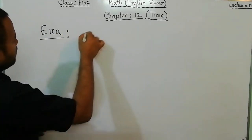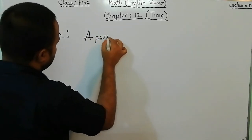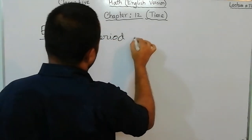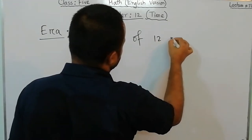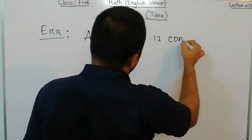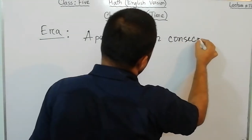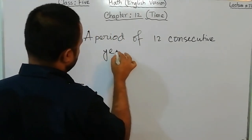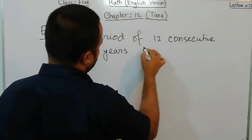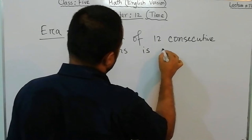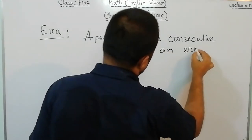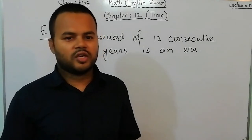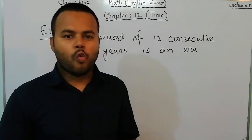A period of 12 consecutive years is called an era. So if there are 12 consecutive years, we can say it is one era.